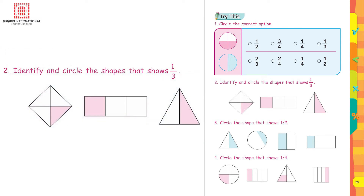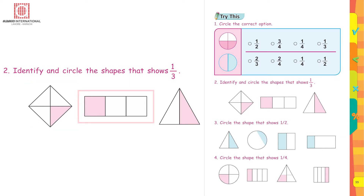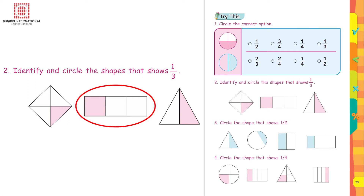Identify and circle the shapes that show one upon three. If the shape is divided into three parts and one part is colored, that represents one upon three. The first picture is divided into four parts, so cross it out. The next picture is divided into three equal parts and one is colored — that means it is one upon three, so circle it.